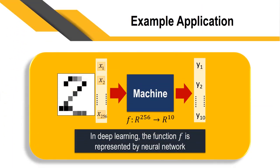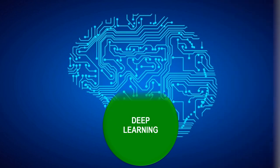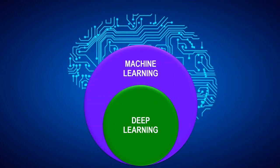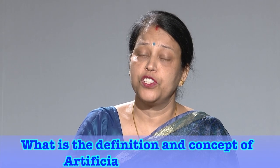In this case, 256 inputs are mapped to 10 outputs, and the mapping is done with the help of an algorithm. In the previous module you learned about various machine learning algorithms. In deep learning, this function f is represented by a neural network. So we can say that deep learning is a subset of machine learning, and machine learning is a subset of artificial intelligence.